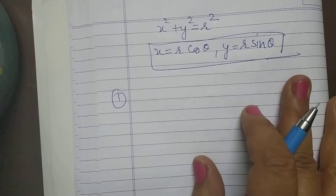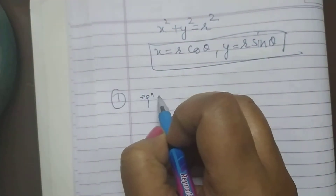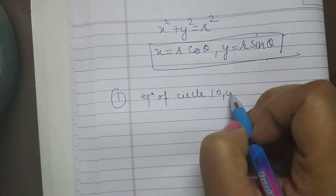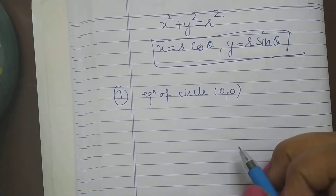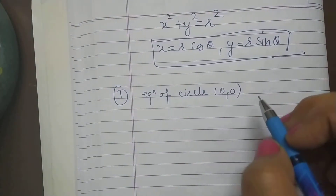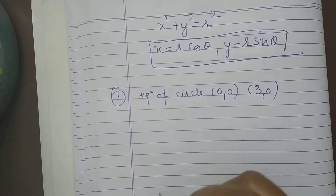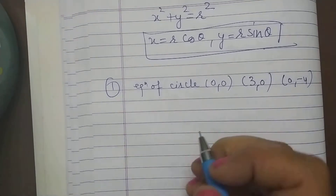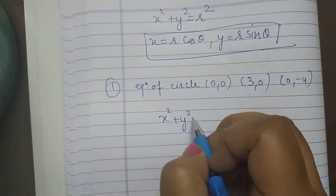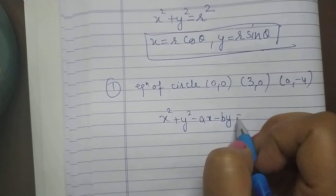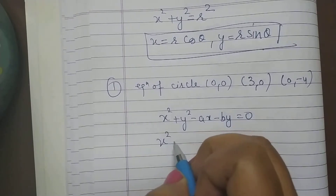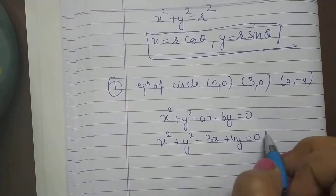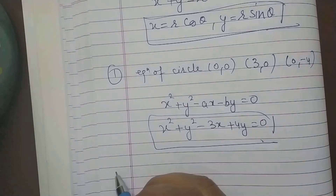First question: Find the equation of a circle which passes through the origin and cuts off intercepts 3 and minus 4 from the axes. That means point (3, 0) on the x-axis and (0, minus 4) on the y-axis. The equation of circle is x squared plus y squared minus ax minus by equals 0, so substituting: x squared plus y squared minus 3x plus 4y equals 0. This is your answer.